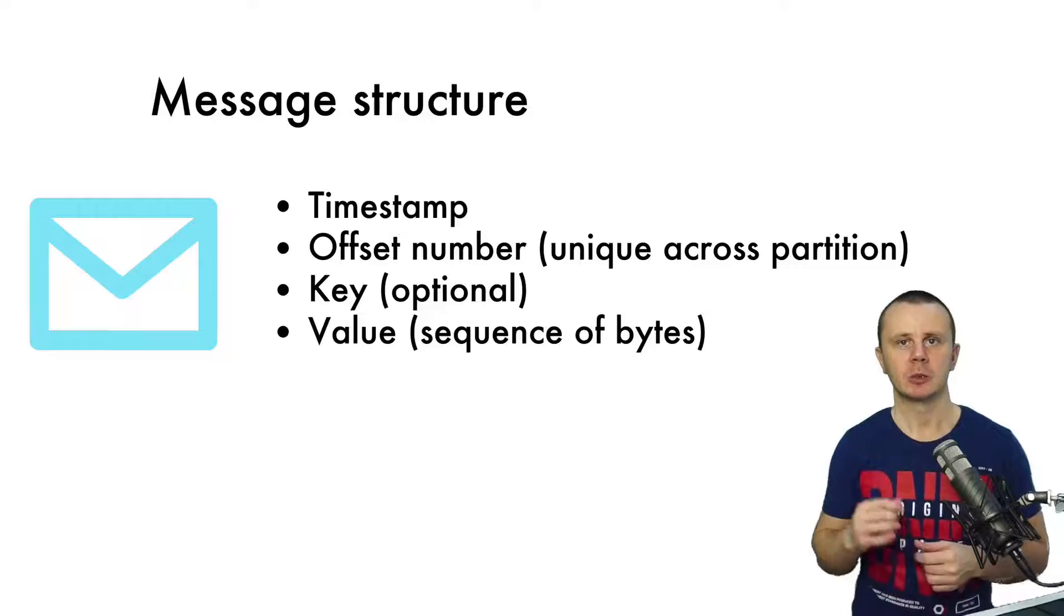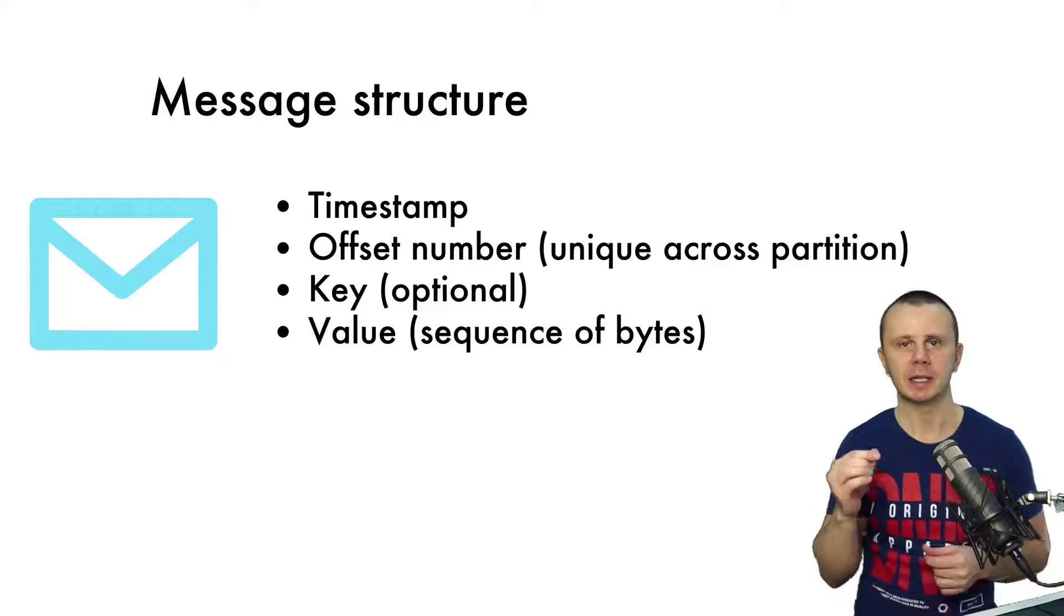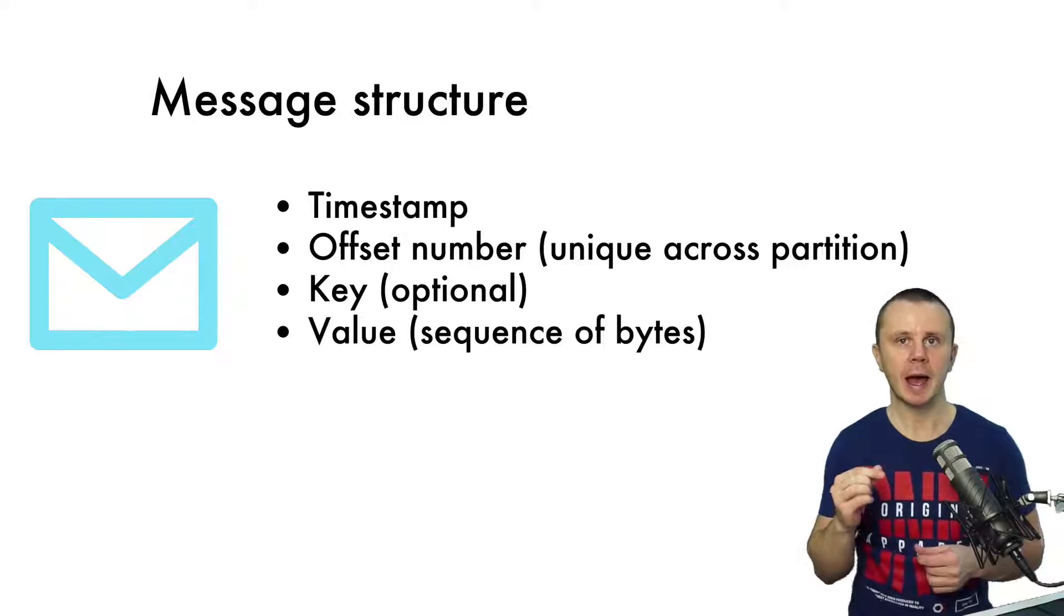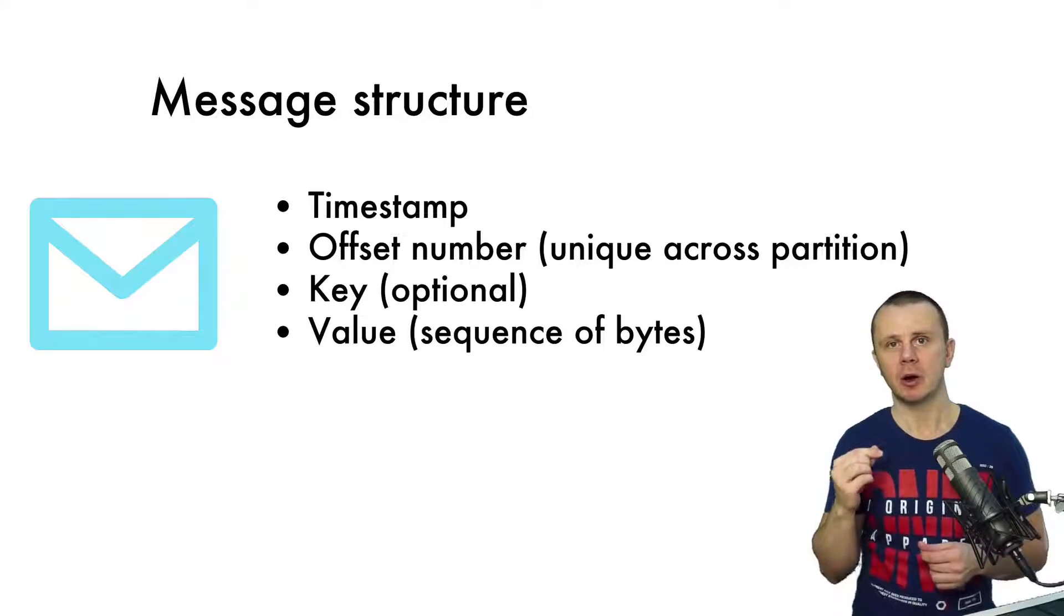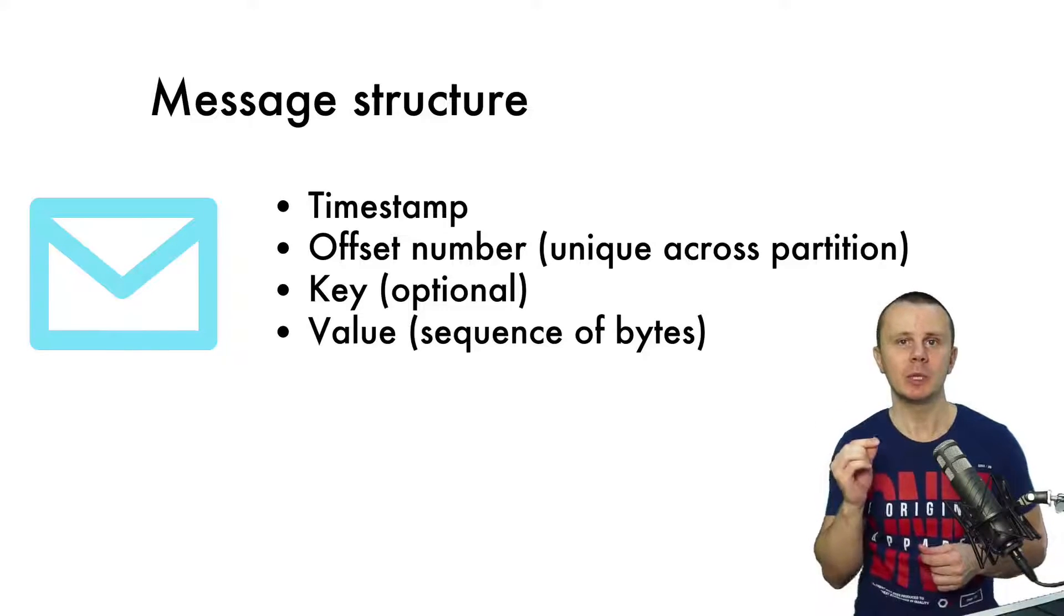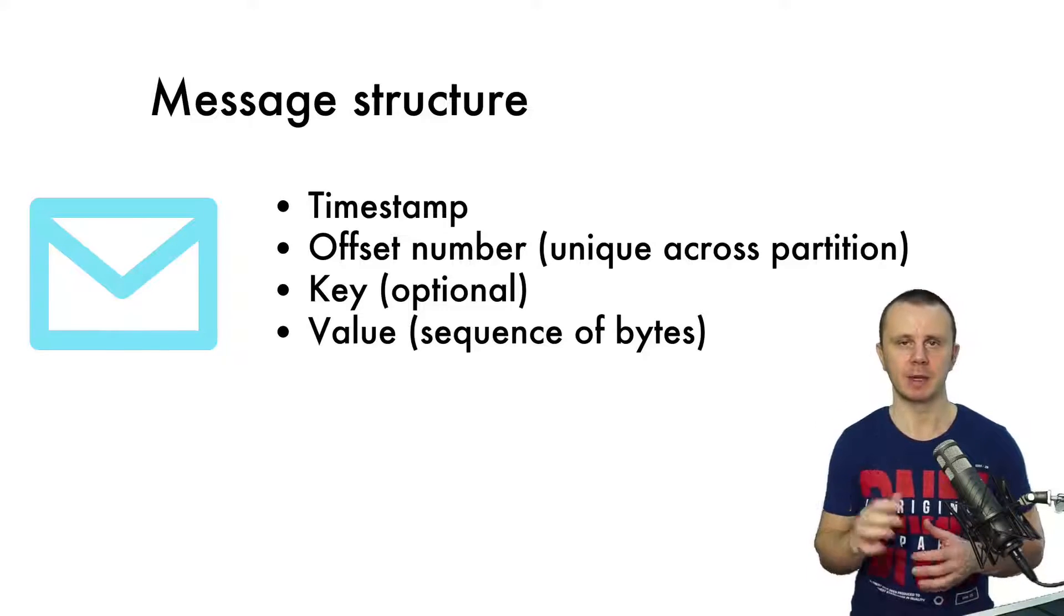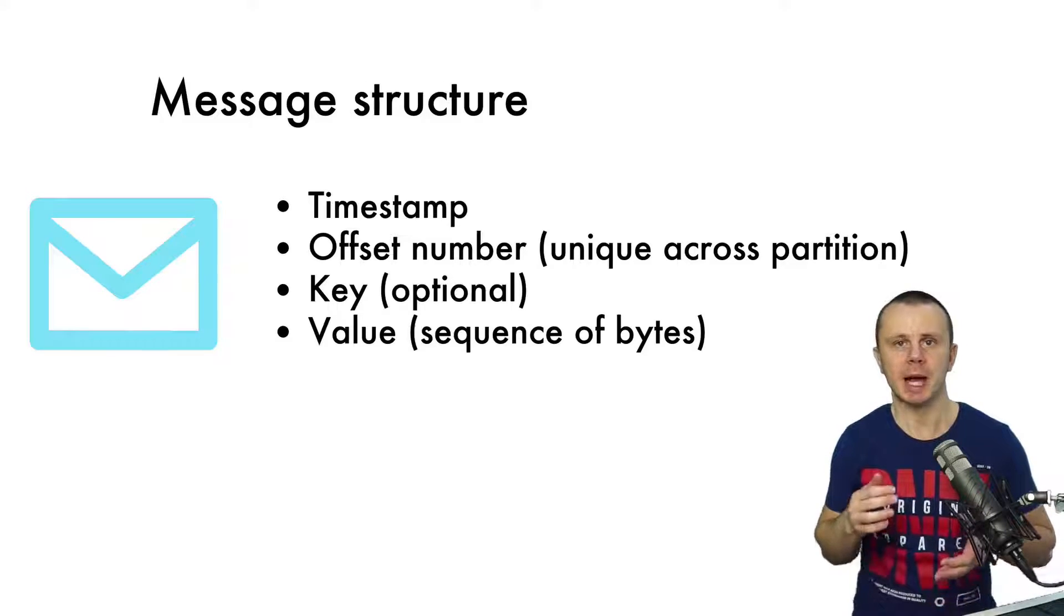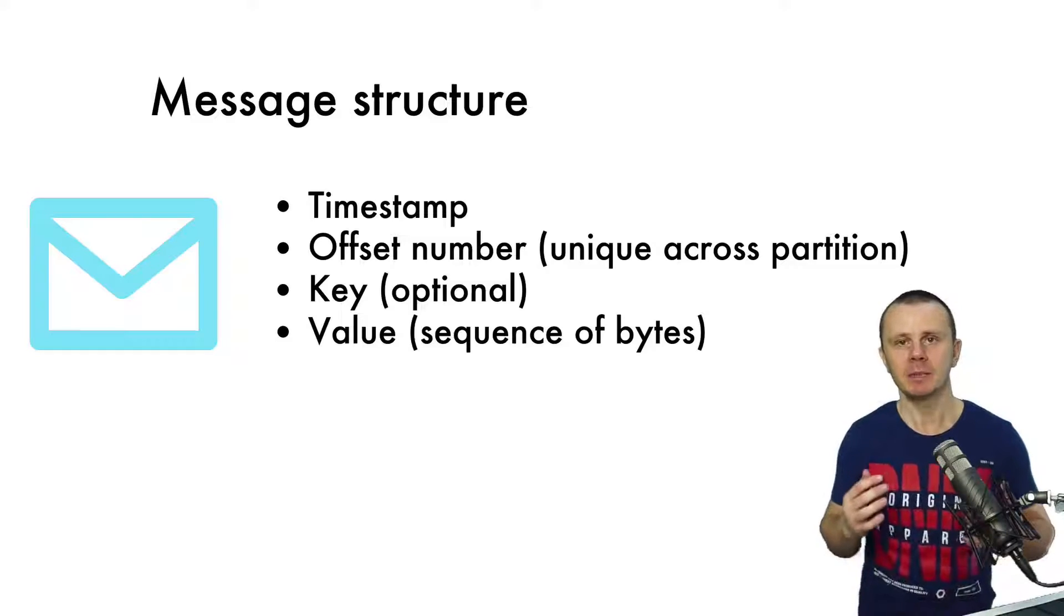So those are the timestamp and offset that are assigned to the message. The message itself may contain a key, which is optional, and a value. The value of every message is simply a sequence of bytes, nothing else. The Kafka broker does not care what is actually stored inside the message; it simply stores a sequence of bytes.